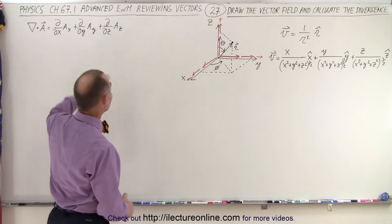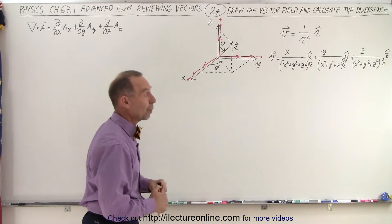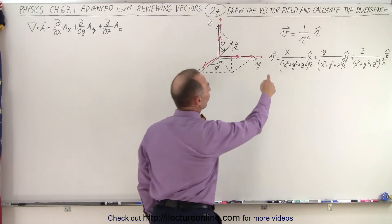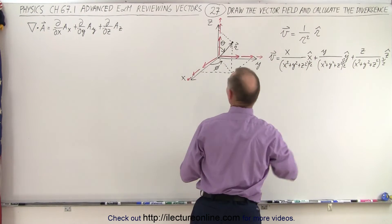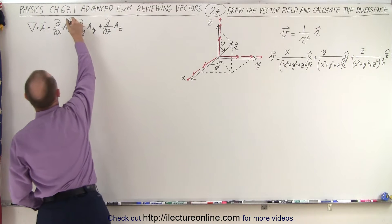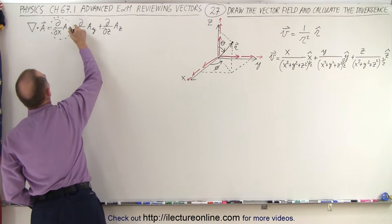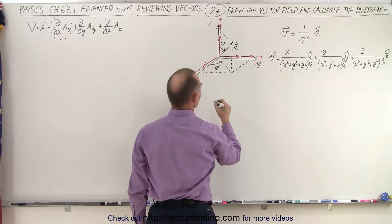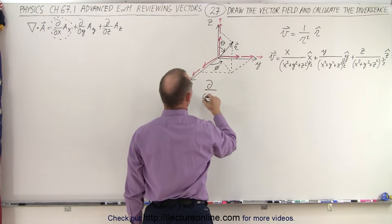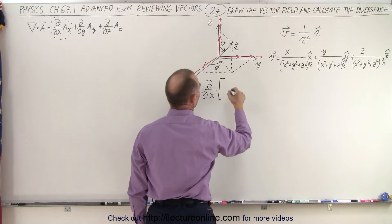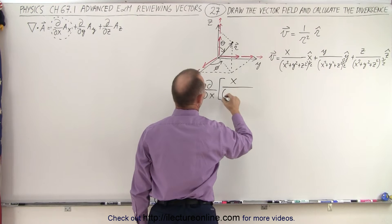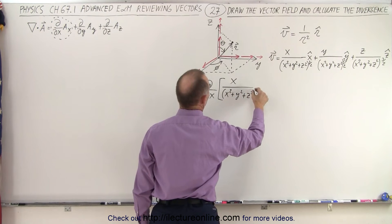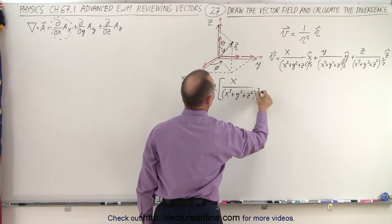Now let's go ahead and do this calculation to find the divergence — it's going to be a little bit more challenging. Let's take one component at a time. We're going to concentrate on just this first portion: the partial derivative with respect to x of x over the quantity x squared plus y squared plus z squared to the 3 halves power.